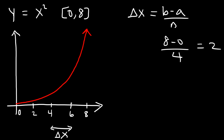We're going to draw four rectangles using the midpoint rule. We draw the rectangles starting from the midpoint of each subinterval: the midpoint of 0 and 2 is 1, the midpoint of 2 and 4 is 3, the midpoint of 4 and 6 is 5, and the midpoint of 6 and 8 is 7.